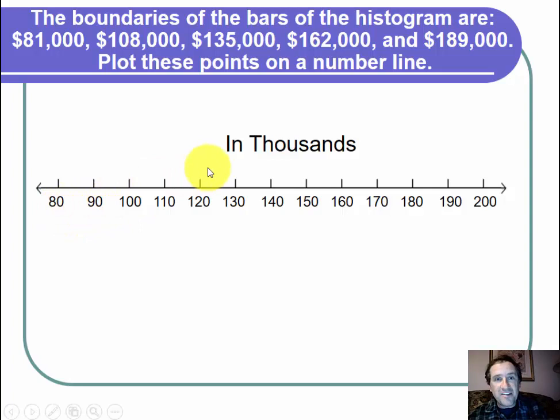I have 80 which is in thousands, so that's 80,000, 90,000, 100,000, and then all the way up to 200,000.